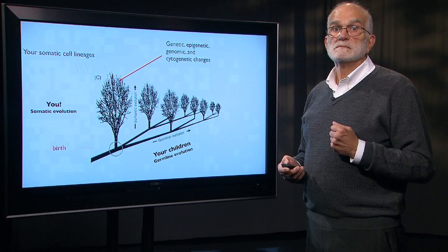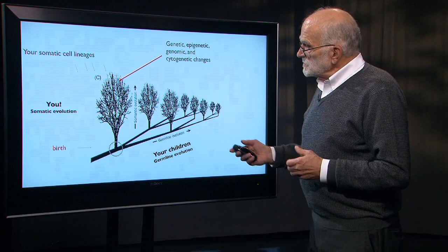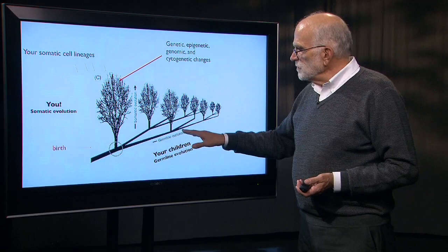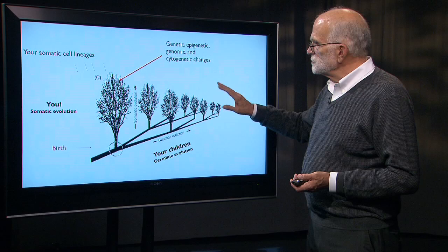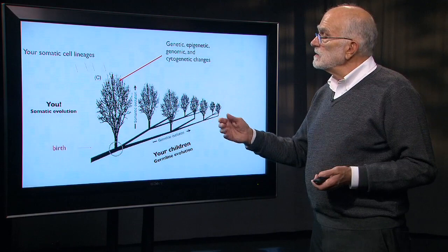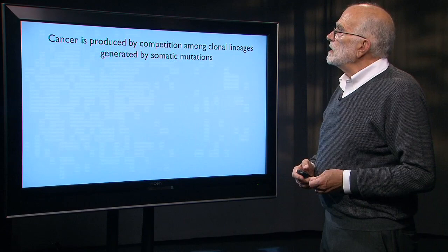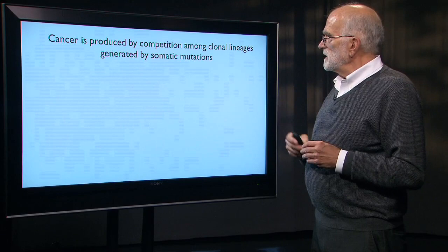Not only have your cells changed epigenetically, they've also mutated somatically. If we look at what goes on over evolutionary time, each generation would have a burst of somatic evolution going on that wouldn't be passed on to the next generation. In that process of somatic evolution, cancer is produced by competition among different clones.